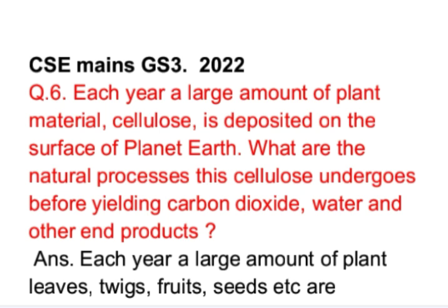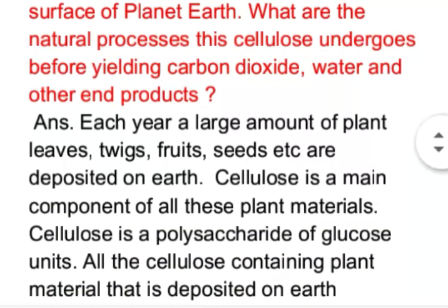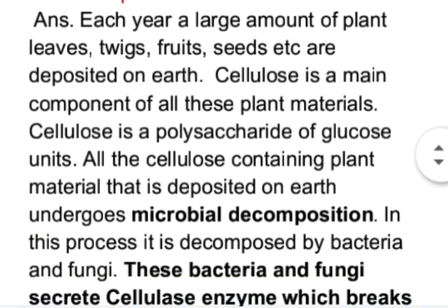Each year a large amount of plant leaves, twigs, fruits, seeds etc. are deposited on earth. Cellulose is a main component of all these plant materials. Cellulose is a polysaccharide of glucose units. All the cellulose-containing plant material that is deposited on earth undergoes microbial decomposition.